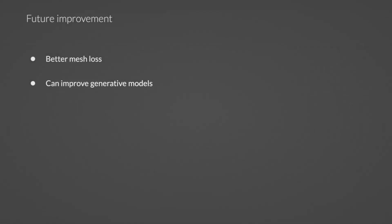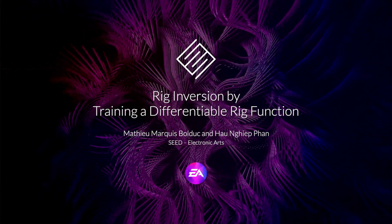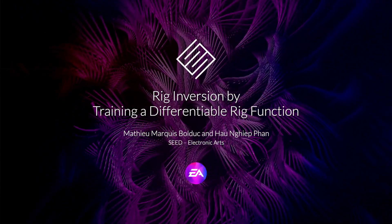To recap, we presented the first method of rig inversion that fully addresses the non-bijectivity of rigs. We do so by having a method that outputs rig parameters that are optimized in mesh space. As future improvement, we are working on using better mesh losses to support data that is more severely out of manifold. We're also working on using this technique to train generative models that directly output rig parameters instead of 4D mesh data, which greatly reduces the dimensionality of the generative problem. We want to thank Matthias Thijs who contributed to this work and thank you for watching this video.